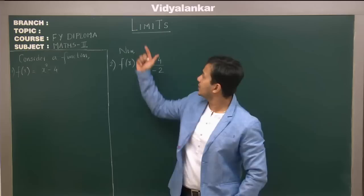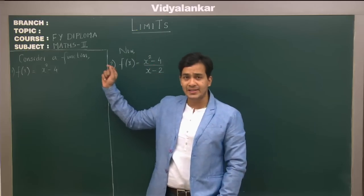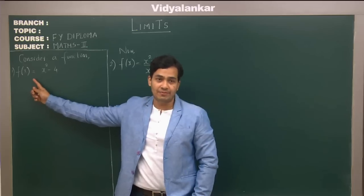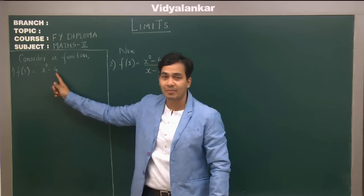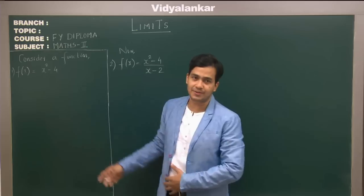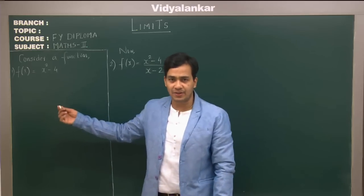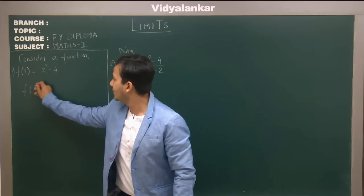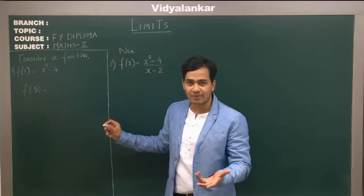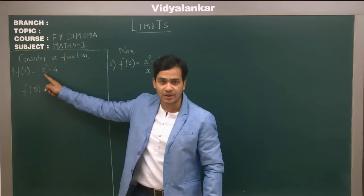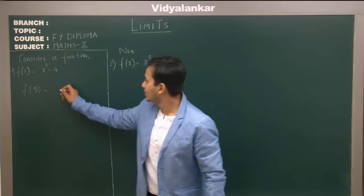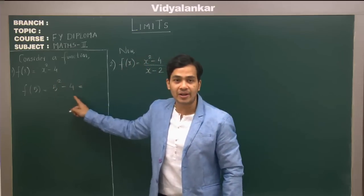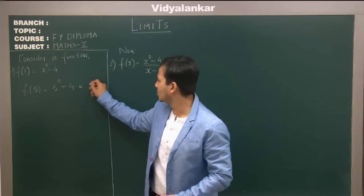Now to start with this chapter, let's take a basic idea of what is a function. A function is written in this form: f(x) = x² - 4. Let's take this function and put some values of x. For example, f(5) — you put 5 in place of x, that gives 5² - 4 = 25 - 4, which is 21.